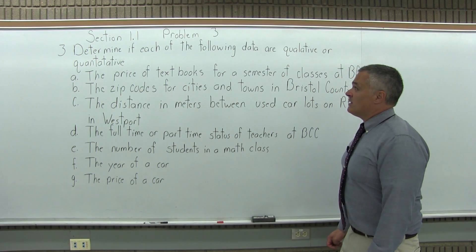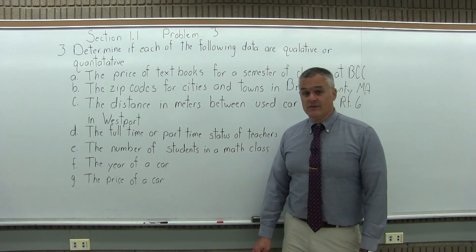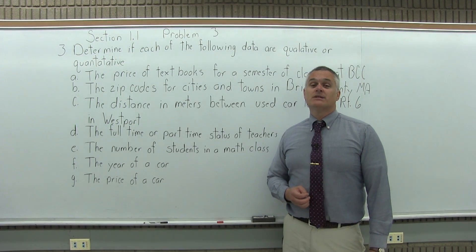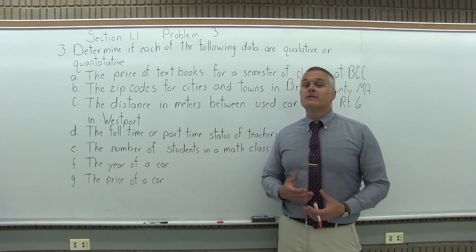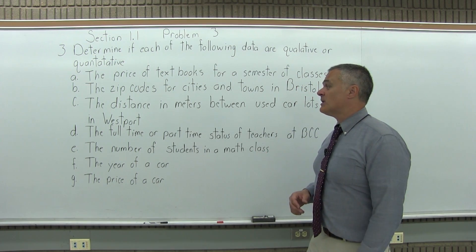It says determine if each of the following data are qualitative or quantitative. If it's qualitative, it's just a label of some sort. And if it's quantitative, it measures a quantity of something. There are seven different things to make that determination about.